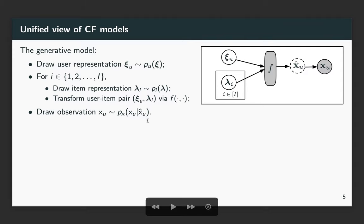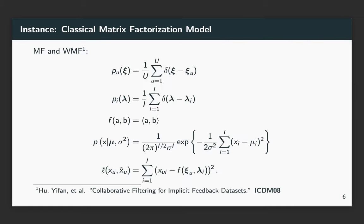Conditioning on x_u-hat, we sample the observation x_u from the observation sampling distribution. Here are some instances of this framework. First is MF and WMF, which use the inner product function for f and Gaussian distribution for the observation sampling distribution.